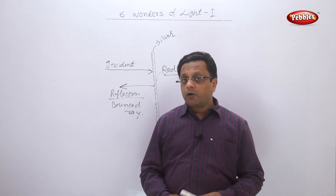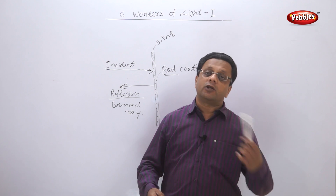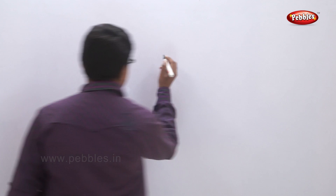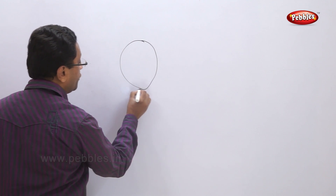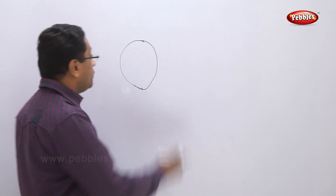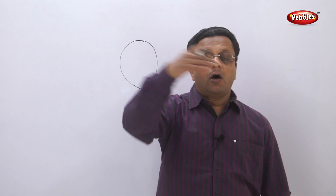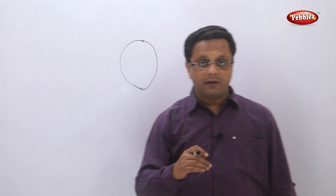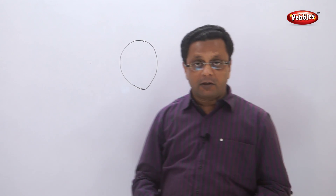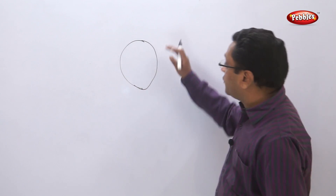Now let us understand what we mean by convex mirrors and concave mirrors. Consider we have a big hollow plastic ball — a sphere. Now suppose I coat the outer surface of the ball with the silver material used for mirror preparation, coating done from outside.